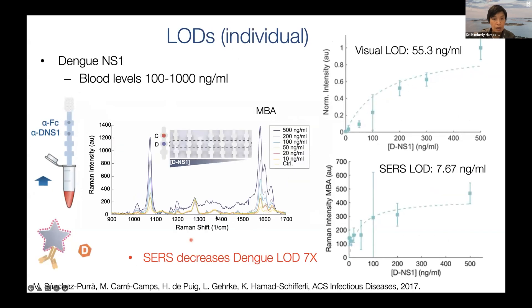We do the same thing for the Dengue test, using only Dengue antibodies, a Dengue nanotag, and Dengue NS1. We see the intensity of the test line increase with NS1 concentration. Measuring the SERS spectra of the test area, we get the 4-MBA spectra showing up. Comparing the SERS LOD to the visual LOD, we see that we improve the LOD by seven-fold — confirming that we can also do this for Dengue individually.